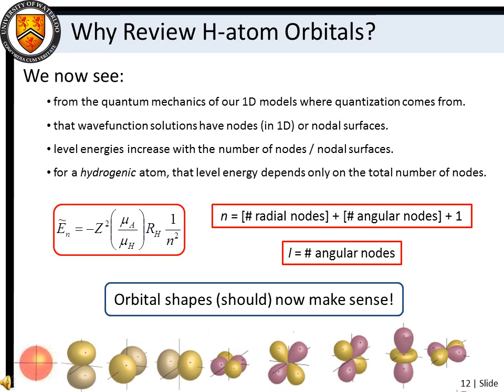By building up our picture of the hydrogen atom from our one-dimensional model, we can now see how quantization arises in atomic systems. It is also now clear how and why nodal surfaces arise for atomic orbitals. Furthermore, we see that the energies of the hydrogen atom quantum states increase with the number of nodal surfaces, and that to a first approximation, level energies depend only on the total number of nodes, which are defined by the principal quantum number N and the orbital angular momentum quantum number L.